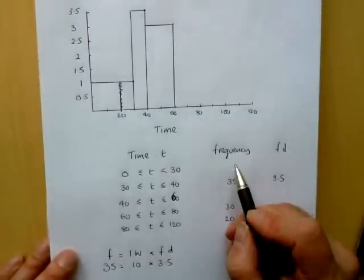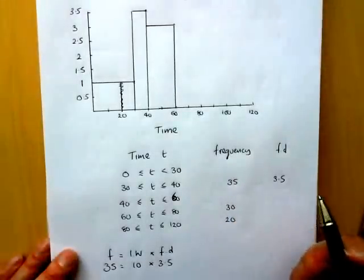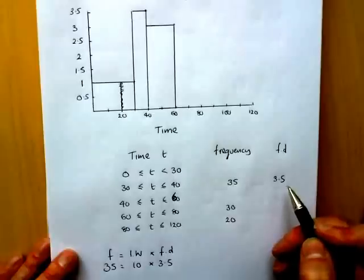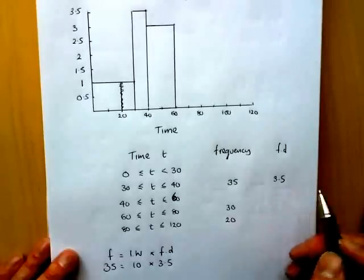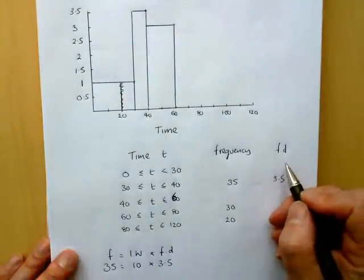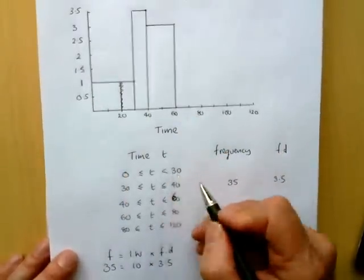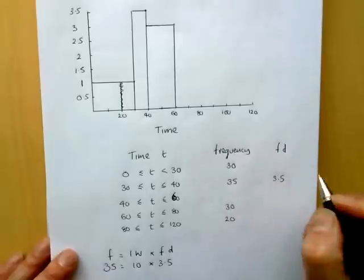Now, if I want to find out my frequency, I'll put my frequency density there. So if I want to fill in the chart itself, then my frequency density of 0 to 30 is 1, and that 1 times 30 will give me 30.